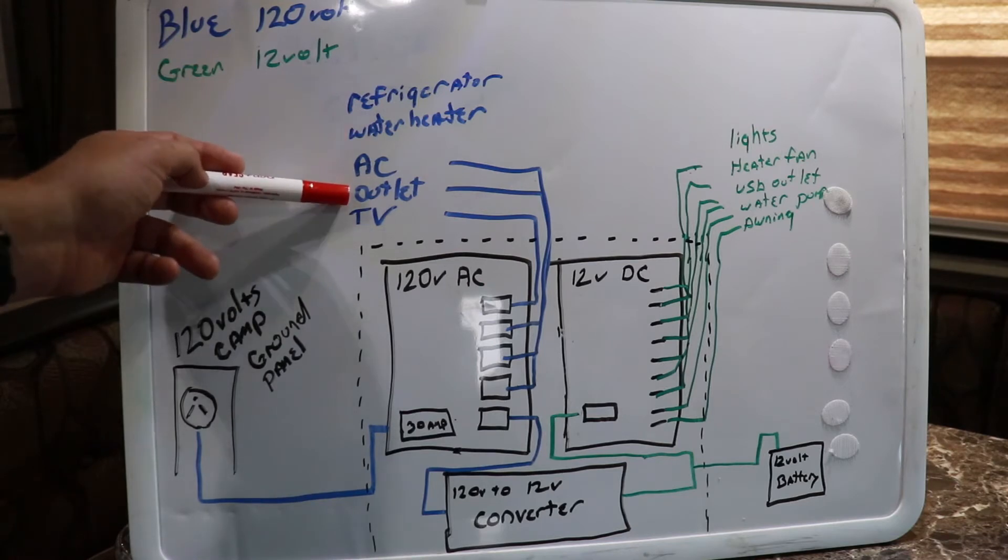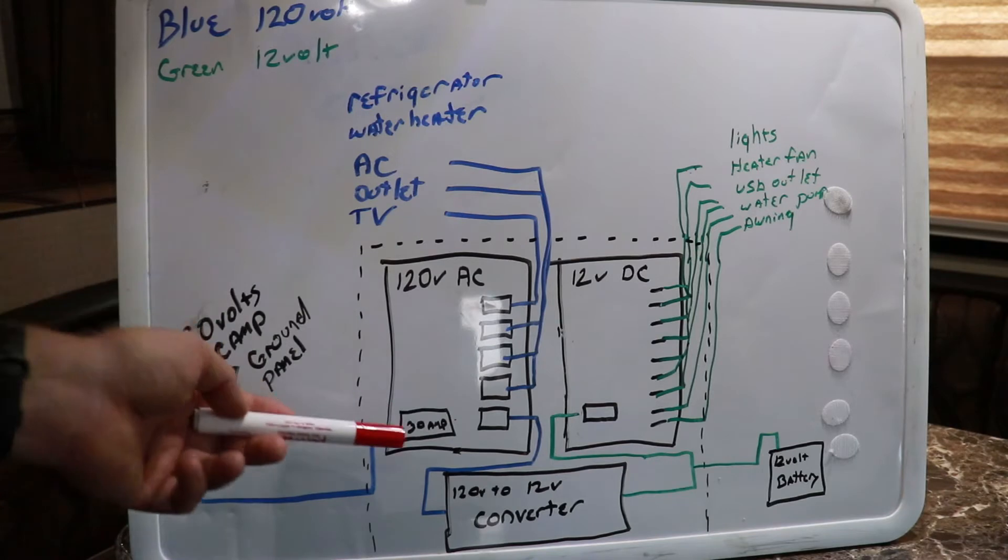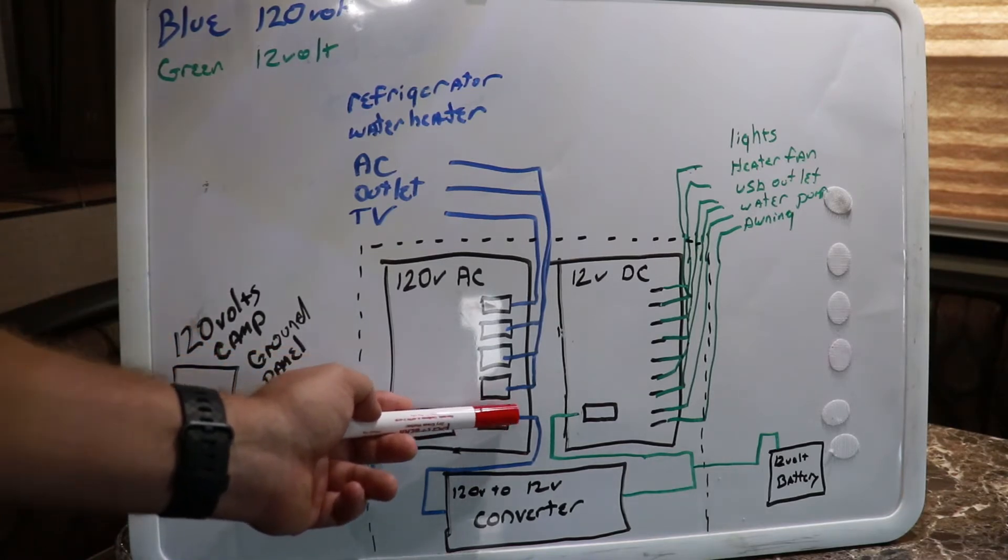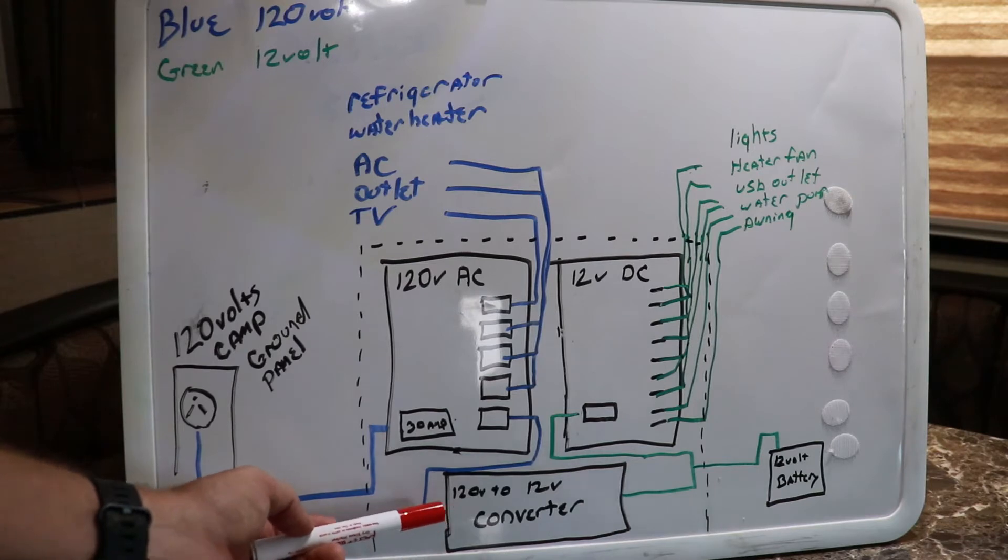You will also have one breaker that'll say converter, and that runs 120 volts to this side of your converter. The converter's job is to take it from 120 volts AC and step it down to 12 volts DC.